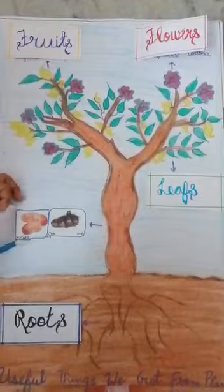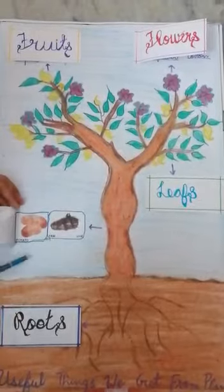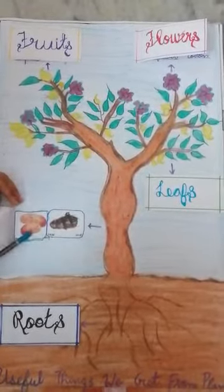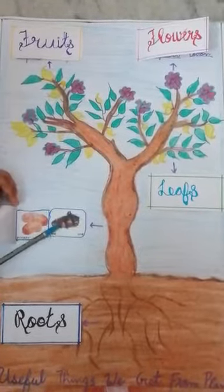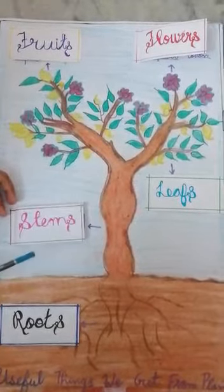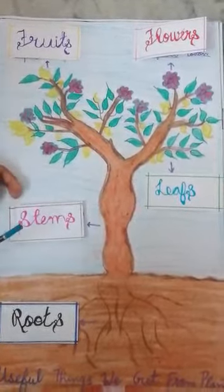From the stem, we get potato, yam, banana, etc.